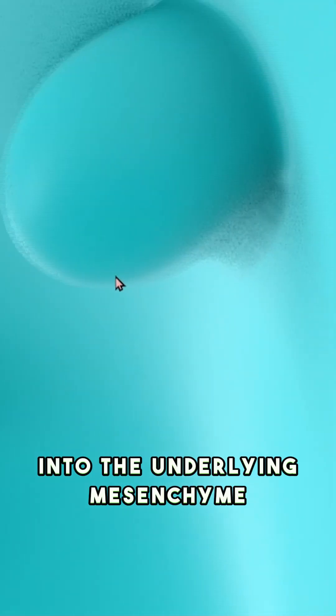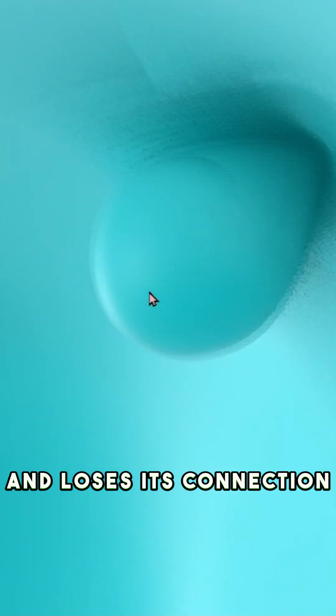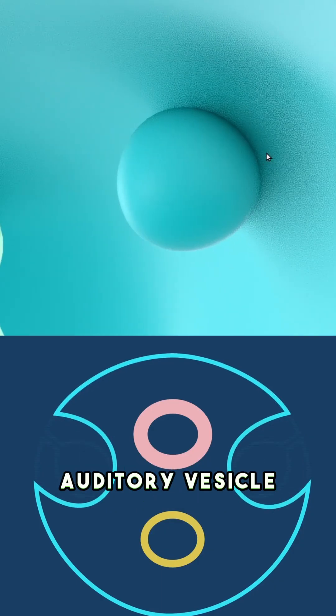It then invaginates inward into the underlying mesenchyme and loses its connection with the surface ectoderm to form the auditory vesicle.